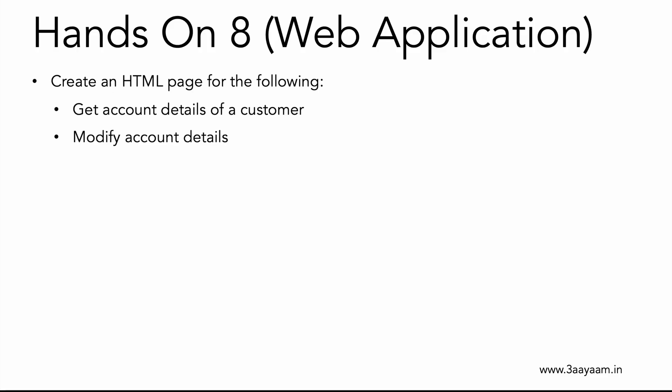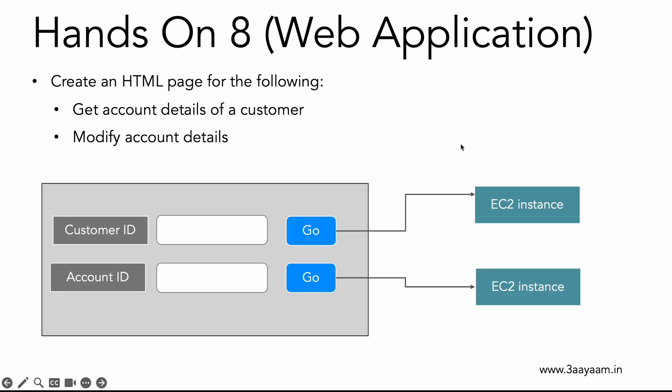Let's do the hands-on. I'll be creating an HTML page where I will get account details of a customer, and then I'll have another button where I can modify account details of a customer. This is how the architecture would be: this is the HTML page, and in the HTML page we'll take customer ID as the input. Whenever the user presses the Go button, it will call an API.